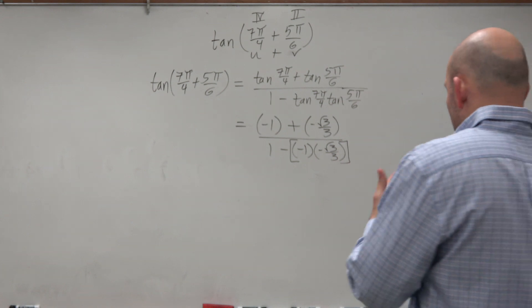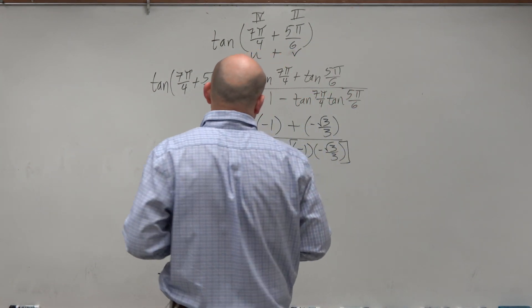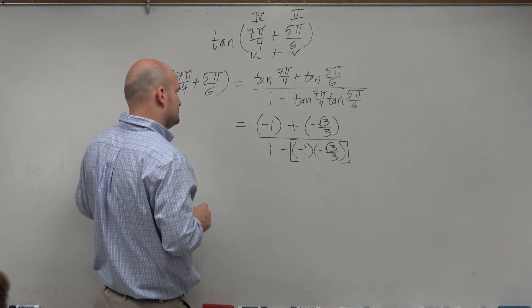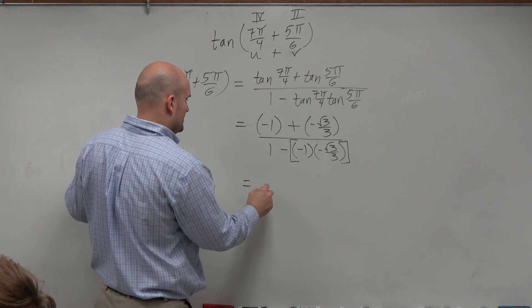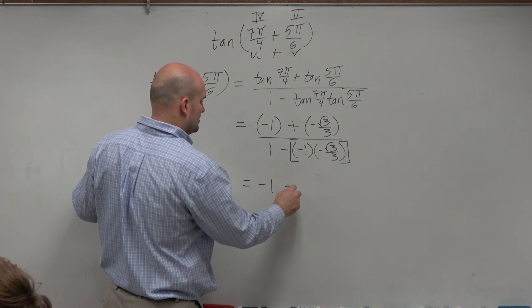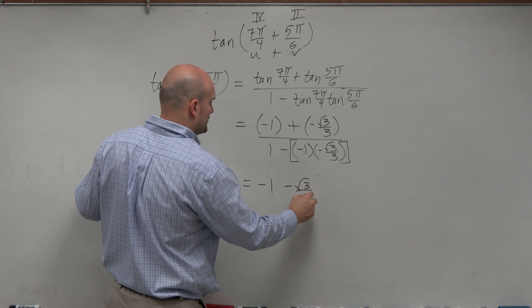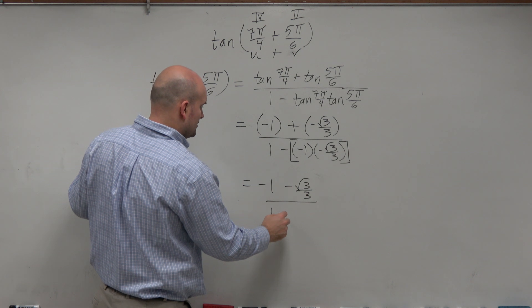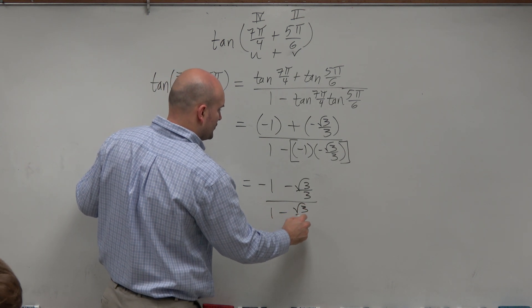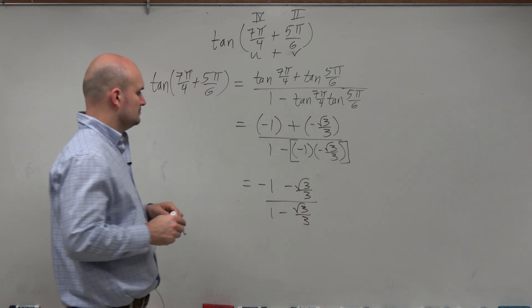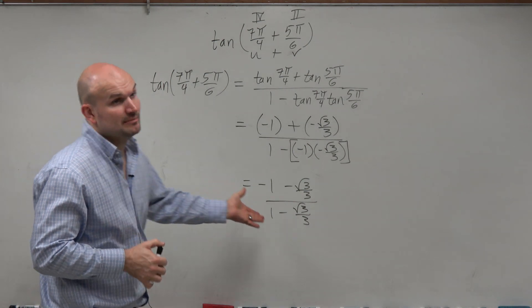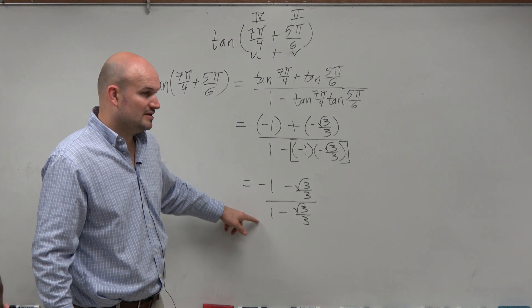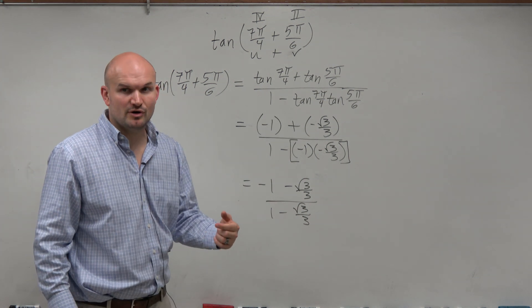So let's go ahead and simplify this. So let's do negative 1 minus the square root of 3 over 3 divided by 1 minus the square root of 3 over 3. Now they look very similar. The only difference is that's a negative, that's a positive. So should we just divide this out and say it's negative 1?